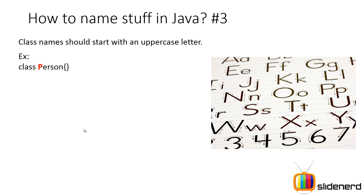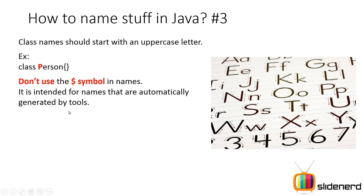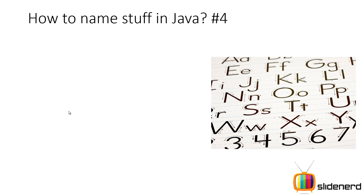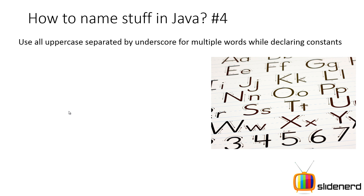Now, how do you name classes in Java? Class names should start with an uppercase letter — for example, `class Person`, starting with a capital letter. Don't use the dollar symbol in names. There are programs like automatic code generators that use the dollar symbol, so people think that code using it was generated by a program, not written by a human. Even though it is perfectly legal, the compiler won't give an error — it is us who follows conventions to make code readable and understandable.